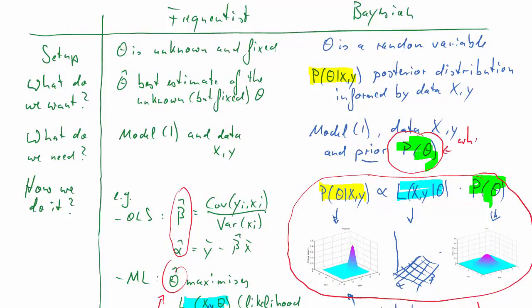And secondly, we need as an input this prior distribution. Now, that can be a strength or weakness of the method, but we have to think carefully where it comes from. And different people may want to use different priors, leading to different results.